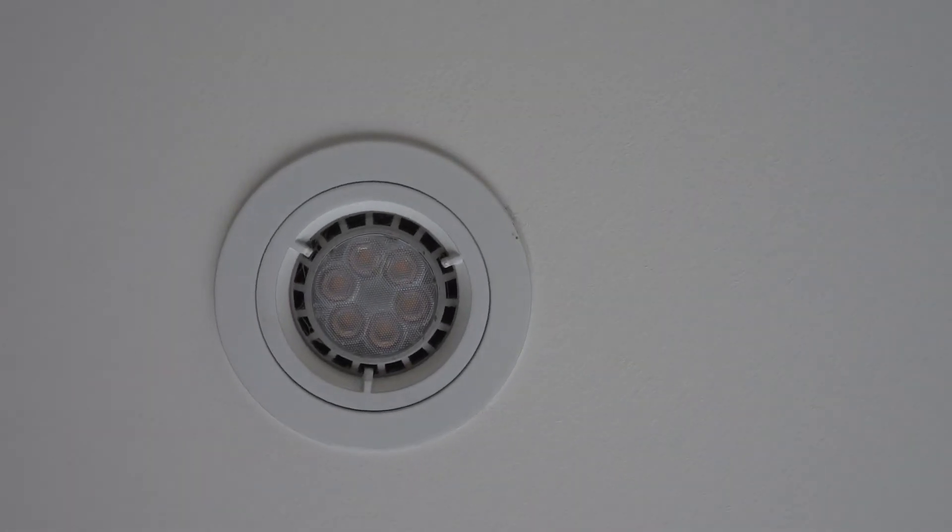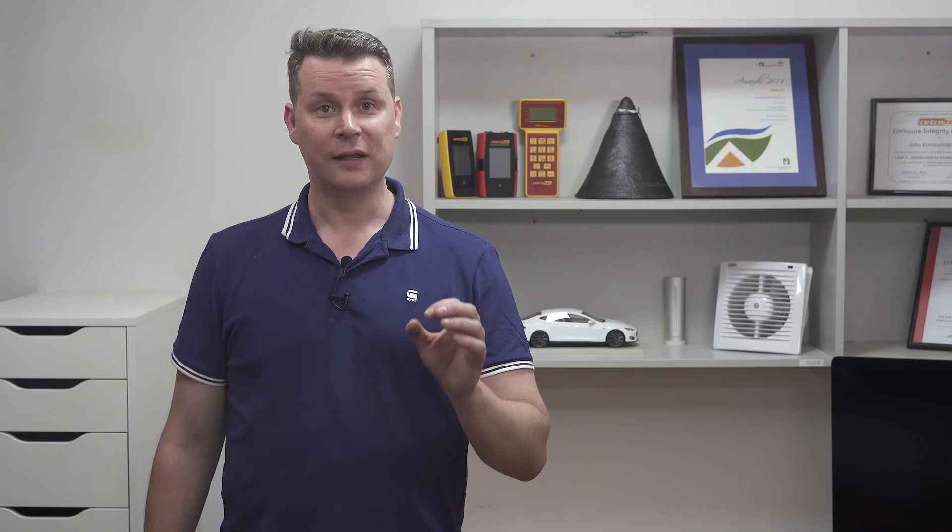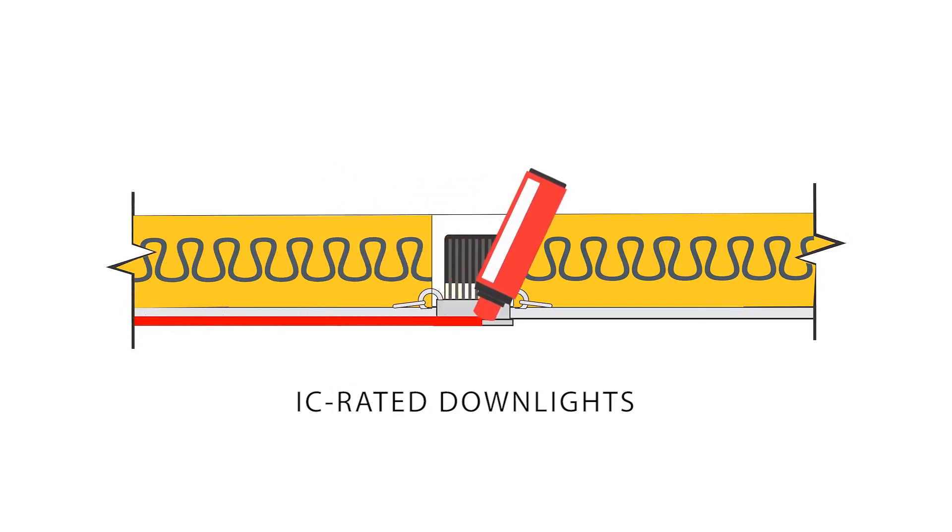One really annoying one is down lights. Make sure you buy a light fitting that is rated for insulation to be in contact. They're usually sealed tight for air leakage and insulated.